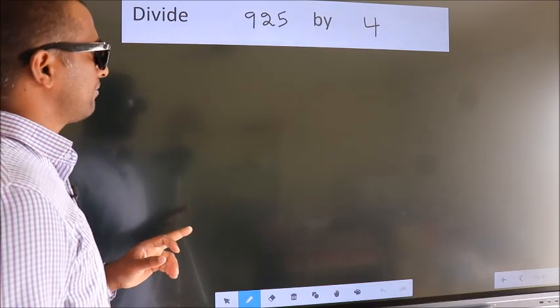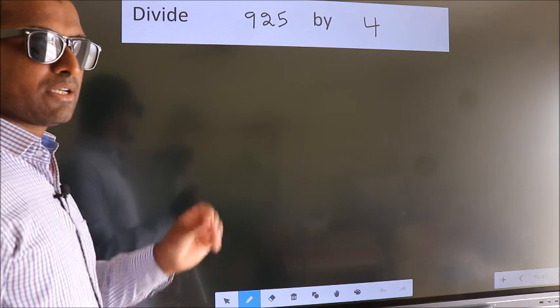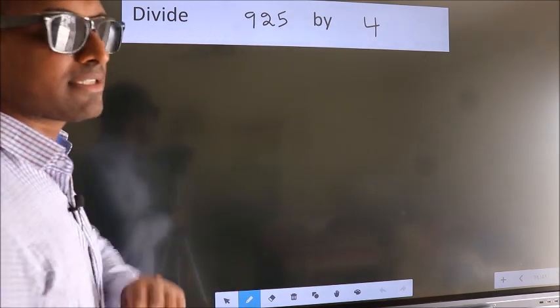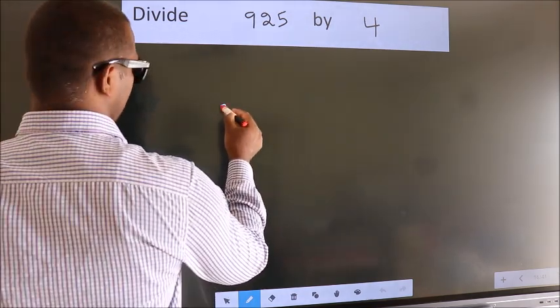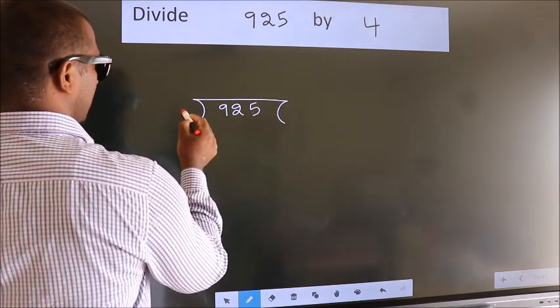Divide 925 by 4. To do this division, we should frame it in this way: 925 here, 4 here.